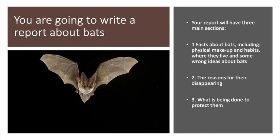Your report is going to have three main sections. You might want to note down the headings on a bit of paper. The first section is facts about bats — it should include their physical makeup, their habits, where they live, and some wrong ideas that people have about bats. Your second section should be about the reasons for their disappearing, and your third section should be about what is being done to protect them. Leave plenty of room between each heading for notes, and I would suggest leaving the most space for section one, which will be by far the longest.